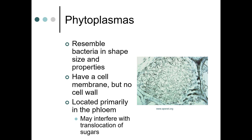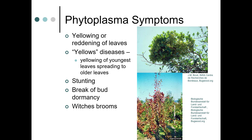Being located in the phloem means phytoplasmas can interfere with the translocation of sugar, which can inhibit growth and cause issues elsewhere. Some of the symptoms you might see are yellowing or reddening of leaves — you can see in the bottom picture some reddening of leaves and yellows diseases.